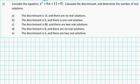Consider the equation x squared plus 6x plus 11 is equal to 0. Calculate the discriminant and determine the number of real solutions.